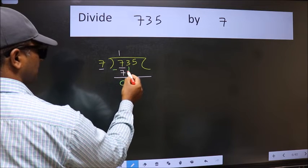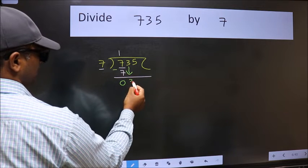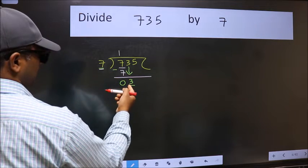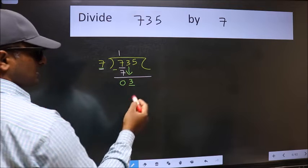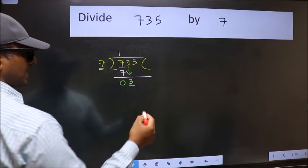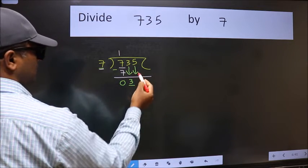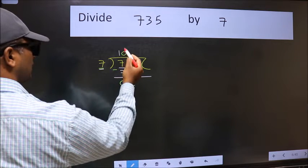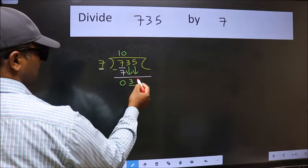After this bring down the beside number. So 3 down. Now here we have 3 and here 7. 3 is smaller than 7. So we should bring down the second number. And the rule to bring down second number is we should put 0 here. Then only we can bring this number down.